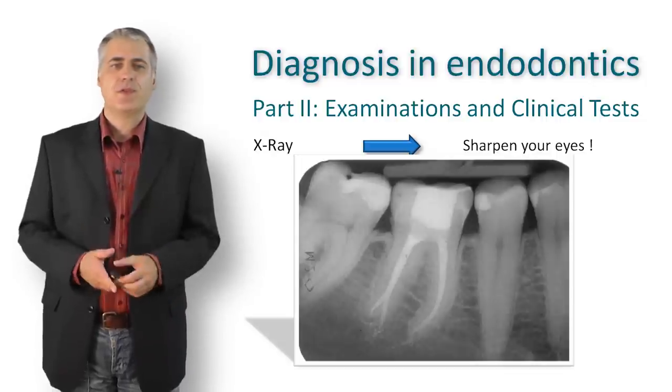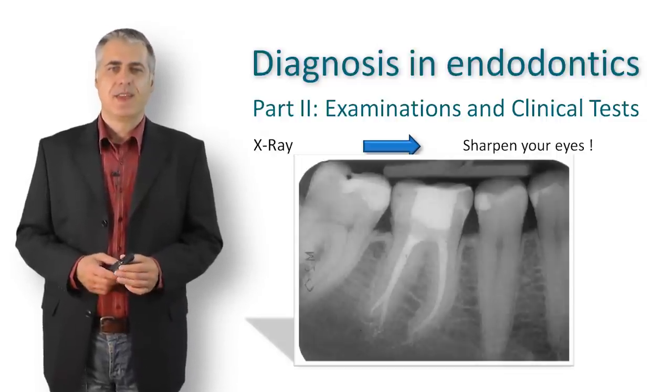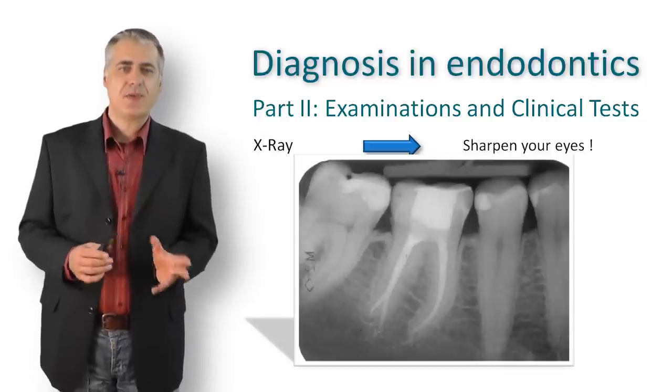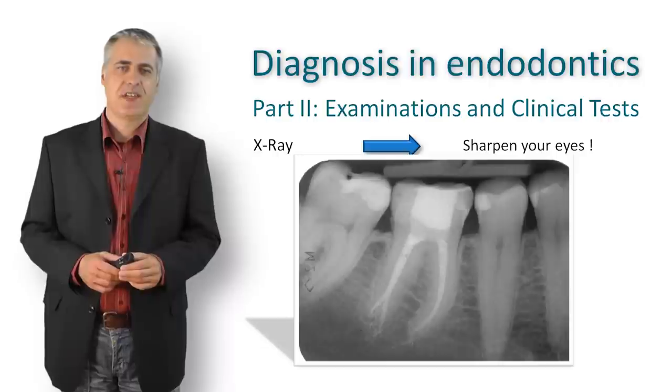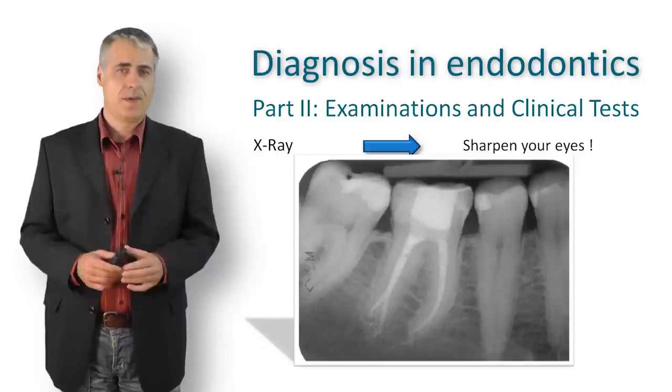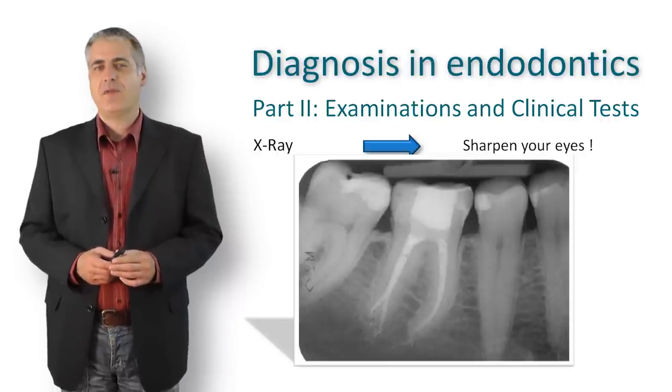With a more mesially angulated master point X-ray, all four canals are visible. The final root filling shows only three canals in this image, but we know four are present in reality.